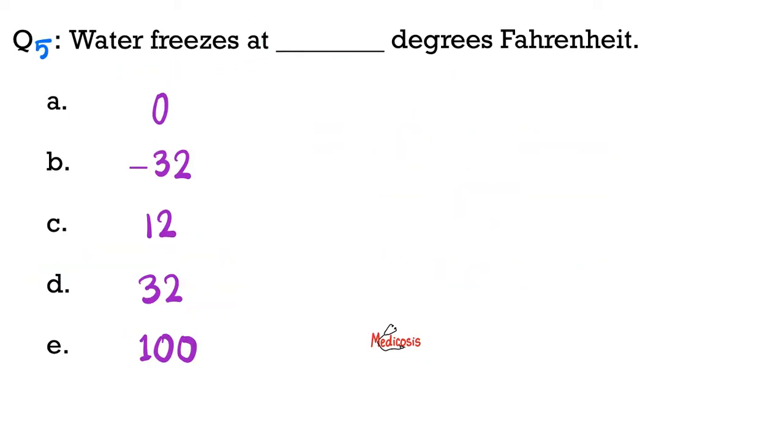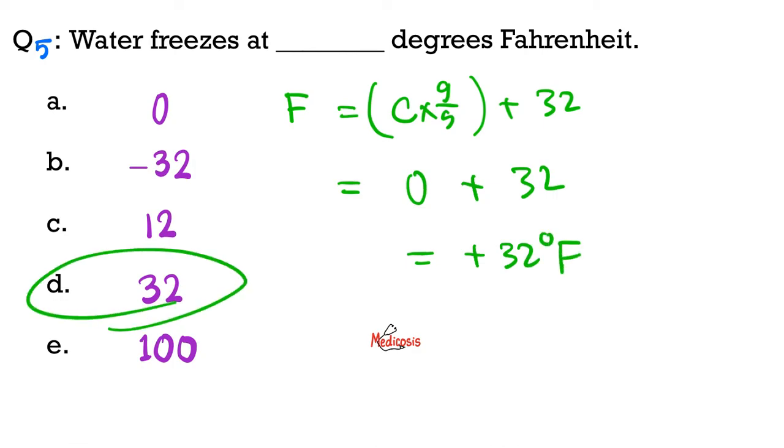Next, water freezes at blank degrees Fahrenheit. This is how we do it. Fahrenheit equals Celsius, multiplied by 9 over 5, and then you add to that 32. So Fahrenheit equals 0 Celsius, because that's freezing. Multiply this by anything, you get 0, plus 32, you get positive 32 degrees Fahrenheit, which is choice D.